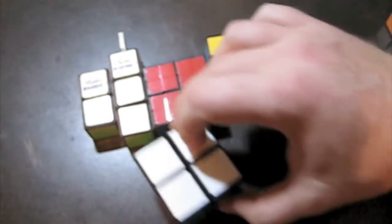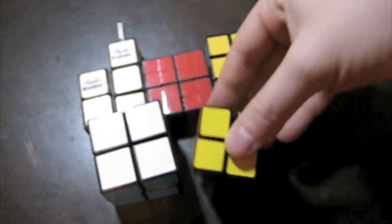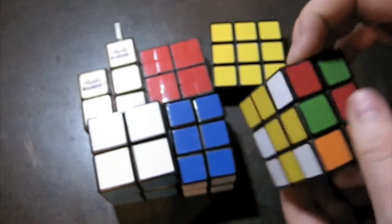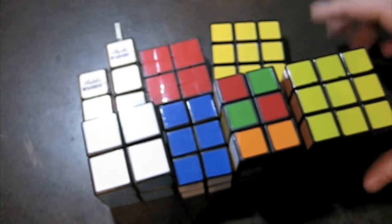I have the 1x1x2, the 1x1x3, the 1x3x3, the 1x2x2. Then I have the 2x2x2, the 2x2x3, now the 3x3x2, and the 3x3x3.